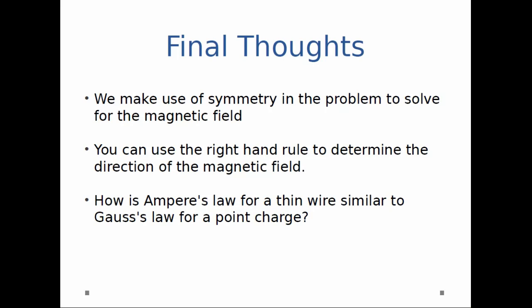So a few final thoughts. First, we make use of symmetry in the problem to solve for the magnetic field. We actually use it a few times. We use it when we're looking at B and DL to determine that the angle between them is zero. We also use it when we're trying to find the magnitude of B and learn that the magnitude is the same everywhere, so we can pull B out of the integral. Both of those make use of symmetry.